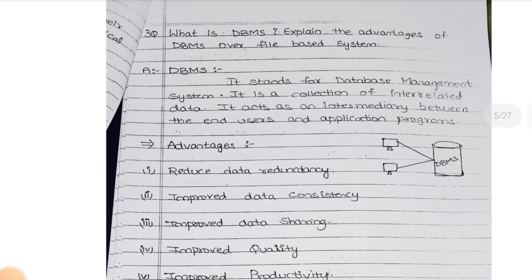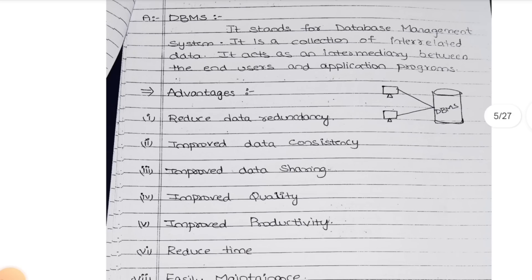Third question: what are the advantages and disadvantages of database management system over file-based system? Whatever DBMS we are having, how it is useful - what are the advantages of it? It reduces data redundancy. Data redundancy is a two-mark important concept - it means duplication of data. Data redundancy is nothing but having the same data multiple times.